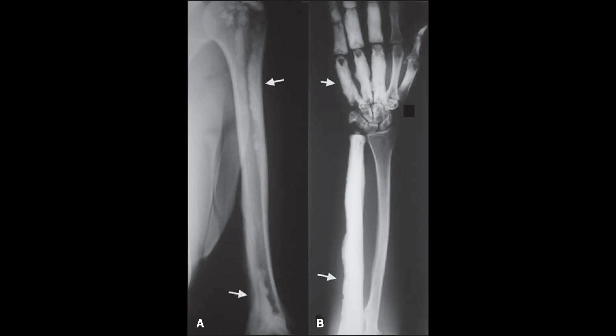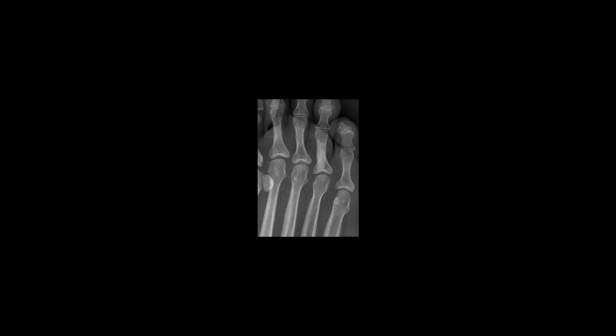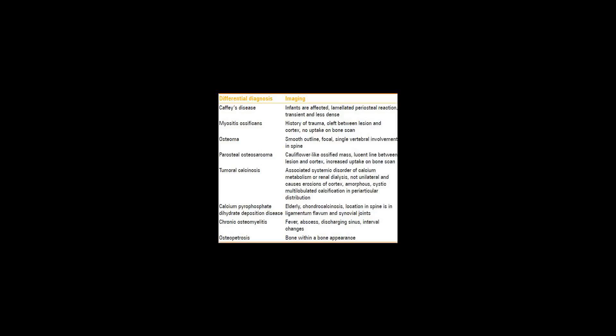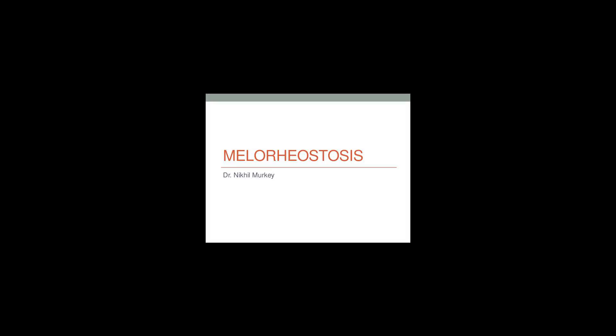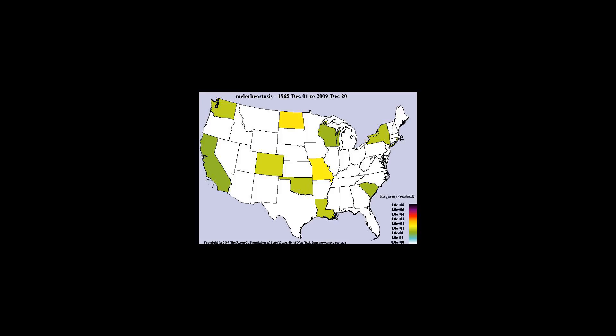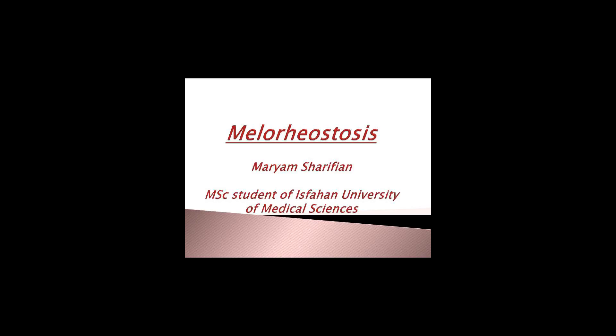Melorheostosis is a mesenchymal dysplasia manifesting as regions of dripping wax appearance or flowing candle wax appearance. It is thought to be caused by a mutation of the LEMD3 gene. The disorder can be detected by radiograph due to thickening of the bony cortex resembling dripping candle wax. It is included on the spectrum of developmental bone dysplasias including pyknodysostosis and osteopoikilosis.